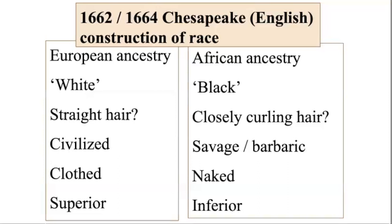The binaries at the bottom—superior, inferior—are clearly false. In order to make the whole system work, these binary associations at the top, European ancestry/African ancestry, would have to be naturalized, and the characteristics in each column linked to one another. It is the same idea as the male superior/trousers, female inferior/skirt set of binaries.